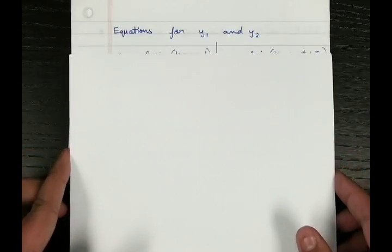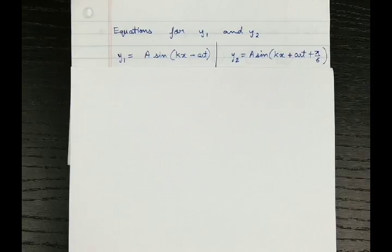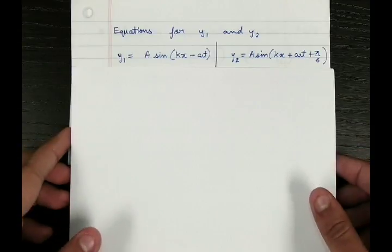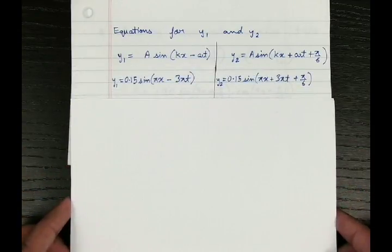Now we have all the information required to write down the equations for y1 and y2. The general equation for y1 is A sin(kx − ωt), and y2 is A sin(kx + ωt + pi/6), since it is travelling to the left and has a phase difference of pi by 6 relative to y1. Substituting the values for k and omega, we write y1 and y2 accordingly.